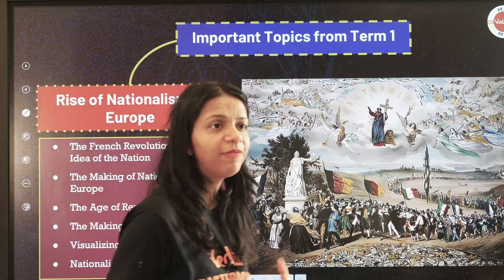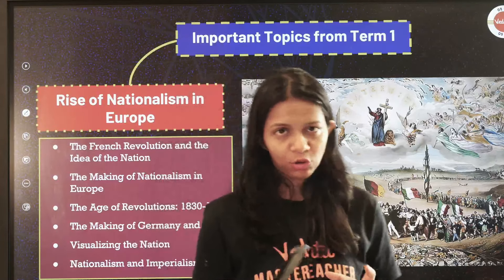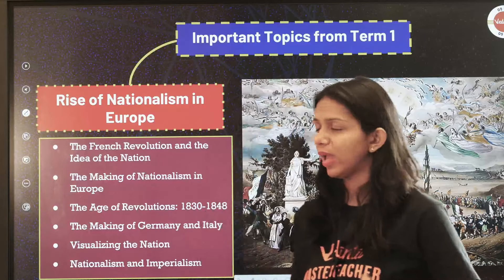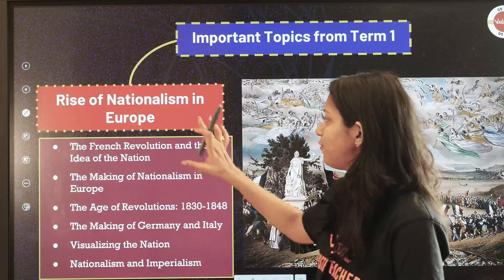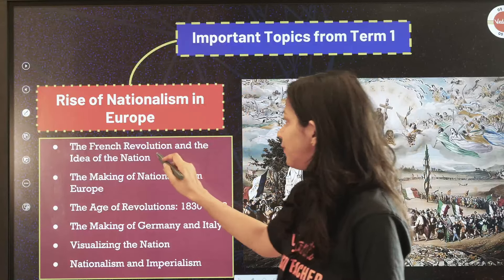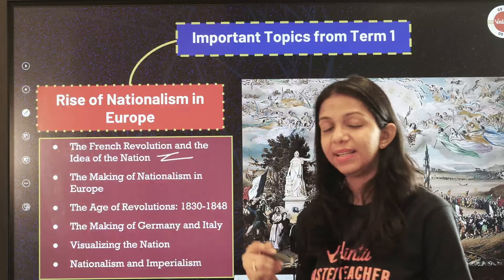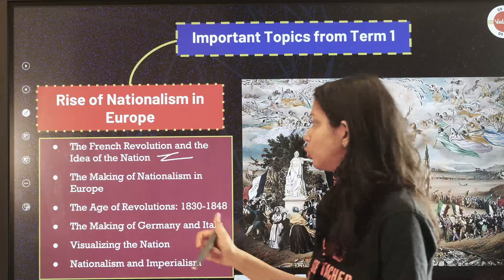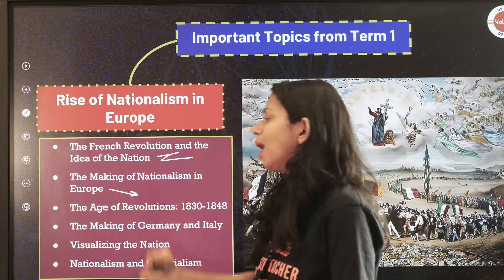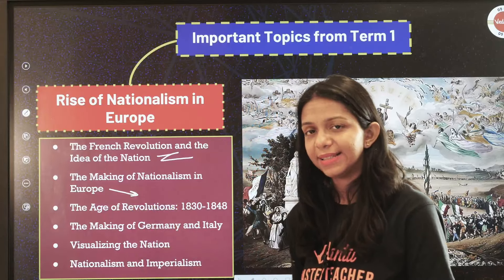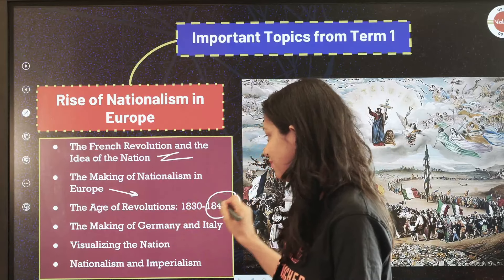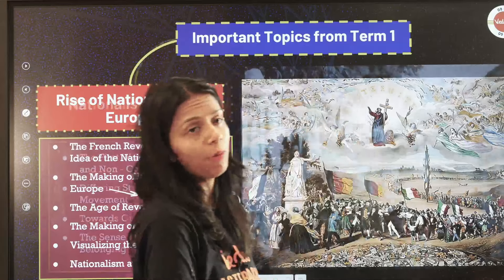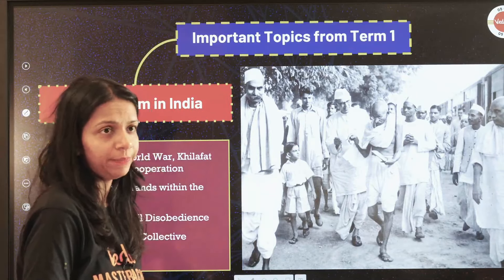Now let's talk about Term One specific chapters you may currently be studying. In 'Rise of Nationalism in Europe,' key topics include: how French revolutionaries created the idea of a nation, how society existed in Europe before 1848, the 1848 Revolution, and unification — these topics repeat frequently in exams.